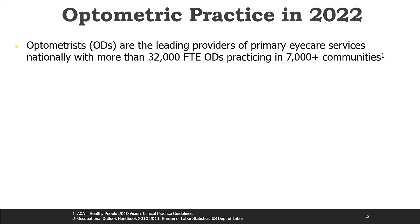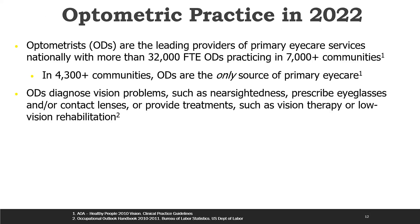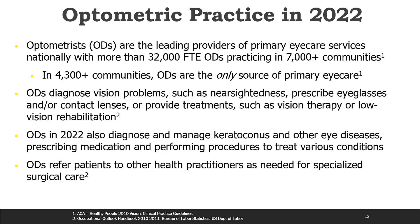In 2022, we are a very different profession. We are among the leading providers of primary eye care services nationally, with 32,000 FTE-equivalent ODs participating around the country. In about 4,300 communities, optometrists are the only source of primary eye care. That means we now manage and diagnose conditions such as keratoconus, glaucoma, retinal disease, and more — and sometimes we do have to refer patients to specialized surgeons for surgical care.